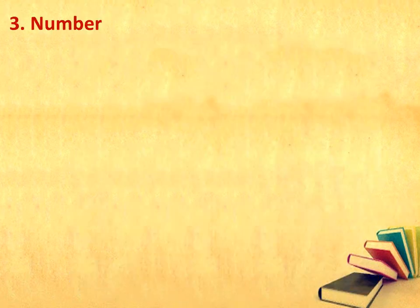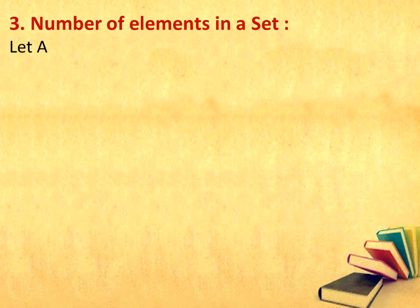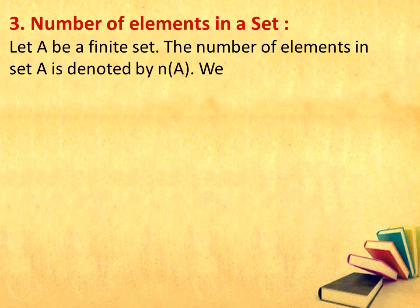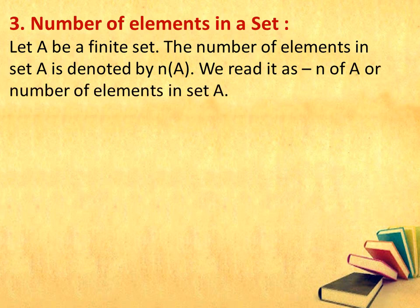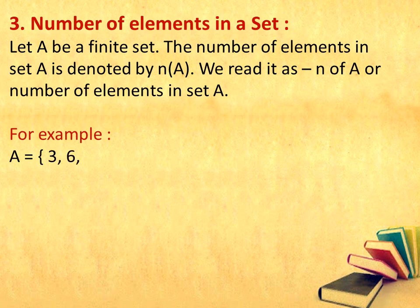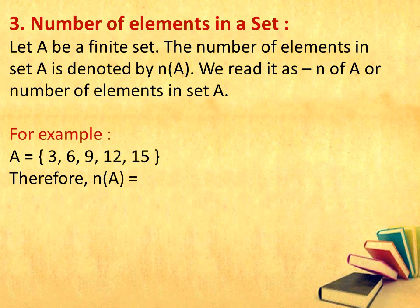Let us now learn what do you mean by number of elements in a set. Let A be a finite set. The number of elements in set A is denoted by N(A). We read it as N of A, or number of elements in set A. Please make a note of how we write N(A). For example, set A is equal to {3, 6, 9, 12, 15}. Therefore, N(A) is equal to 5, because when you count the elements — 1, 2, 3, 4, 5 — you get 5.